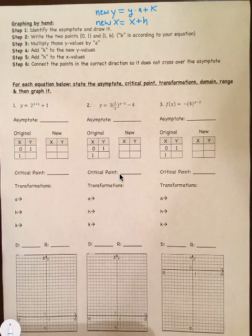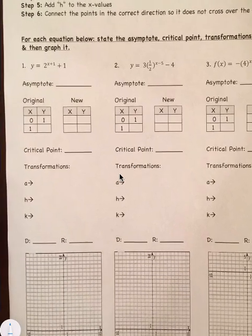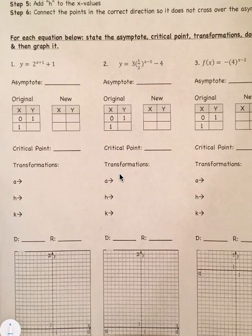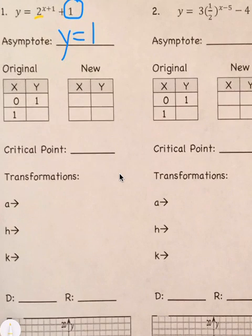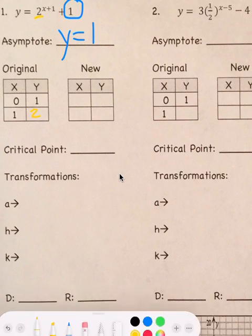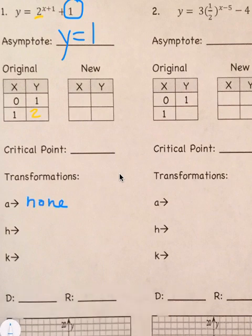So it says for each equation below, state the asymptote, the critical point, transformations, domain range, and then graph it. So the asymptote is pretty easy to find. You look at the k value. In this case, it's 1. So our asymptote would be y equals 1. Now, when we're graphing these, we only need to graph two points. And the way we do it original is (0,1) and (1,b). In this case, our b value is 2. So inside here, we'll put 2. Now, to find our new points, we look at our graph. And I'm actually going to list our transformations because I think this will help. Our a value, there is none. No a value. h, it's plus 1, so that means it moves left 1. And then the k is plus 1, so it moves up 1.